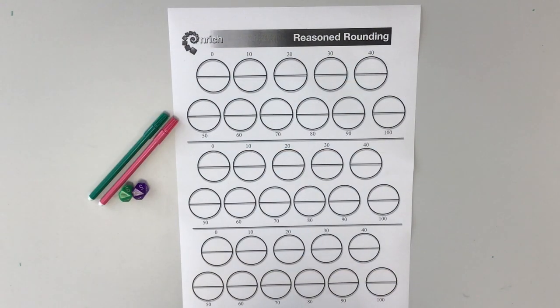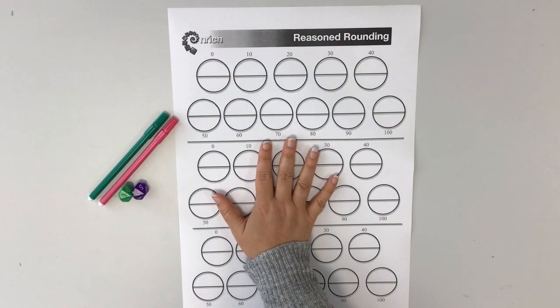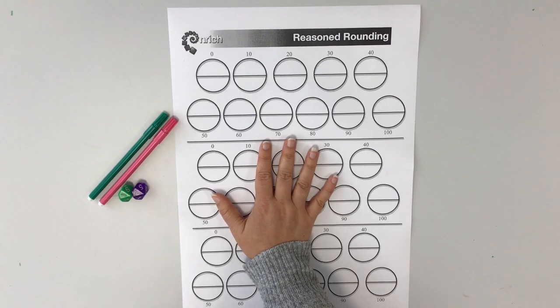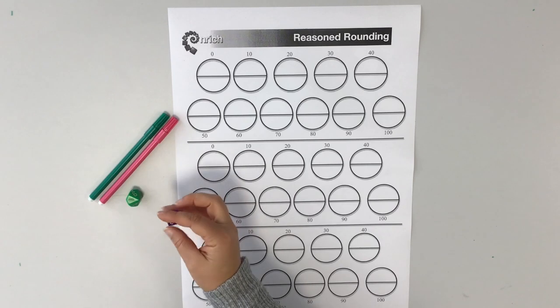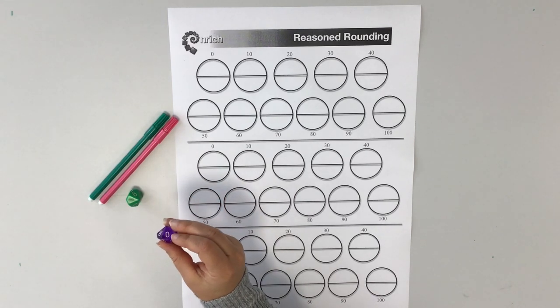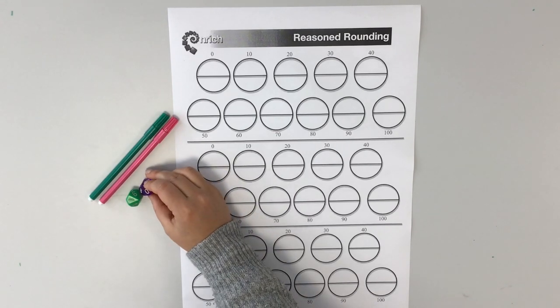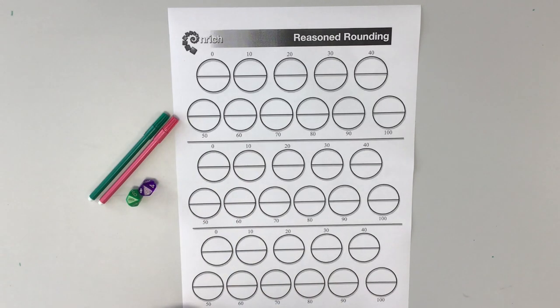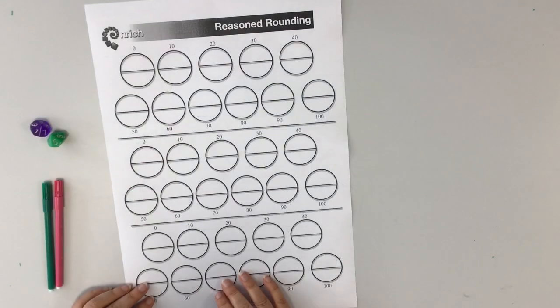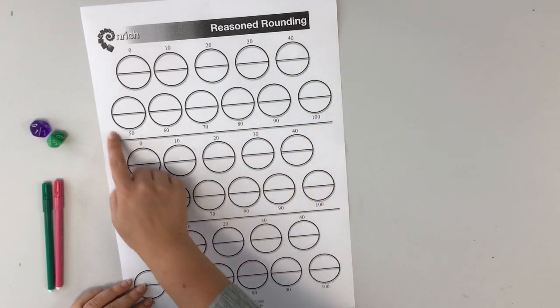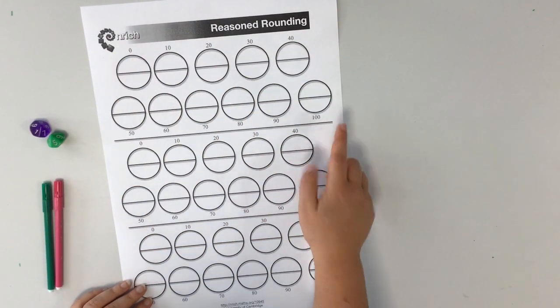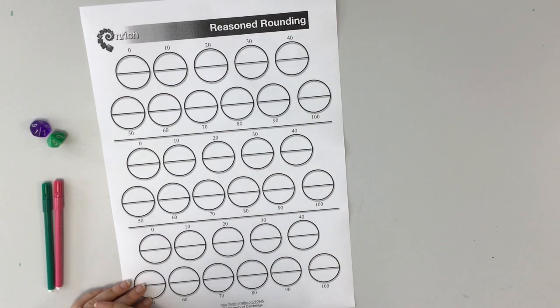So all you need for this game is the reasoned rounding sheet, which you can download from the link in the description. Two color pencils or felt tips and two 0 to 9 dice. It is important that they have the 0. If you don't have 0 to 9 dice at home, don't worry. There are virtual dice that we will link in the description below. So the aim of the game is to win the board by conquering more circles than your opponent. There are 11 circles in total, so the first person to win 6 circles wins the game.